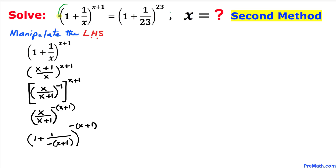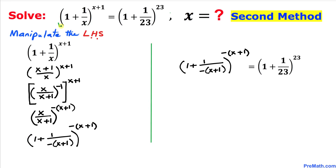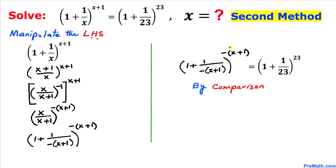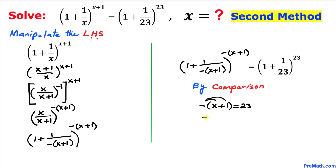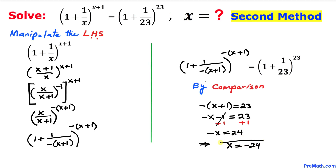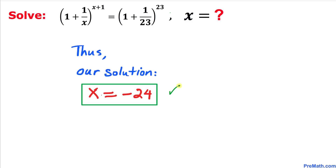We have manipulated the left hand side and transformed the original equation. By comparison, we can write −(x + 1) = 23. Distributing the sign: −x − 1 = 23. Adding 1 to both sides: −x = 24, so x = −24. Thus our solution from Method 2 is also x = −24. Thanks for watching and please don't forget to subscribe to my channel for more exciting videos.